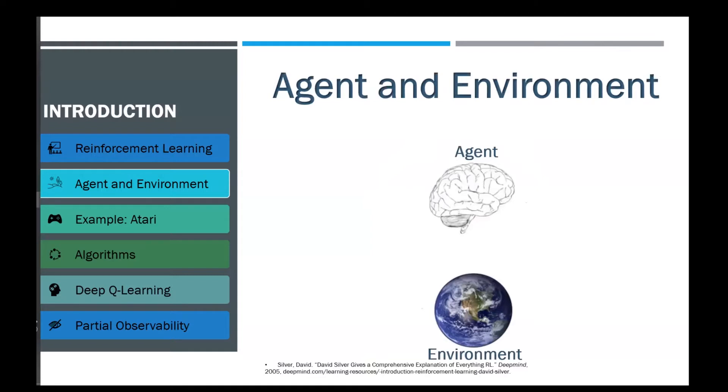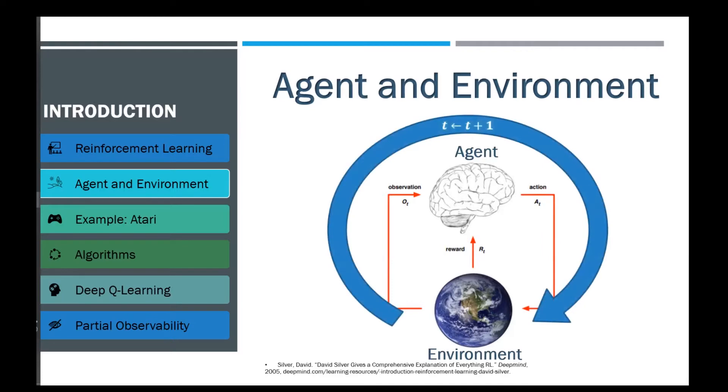In this framework, we look at tasks involving an agent and its interaction with an environment. At each time step T, the agent receives an observation, receives a scalar reward, and executes an action. In the next step, the environment receives the action, emits another observation, and emits another scalar reward. This continues for as long as necessary. The agent should act in such a way as to maximize the cumulative future reward.